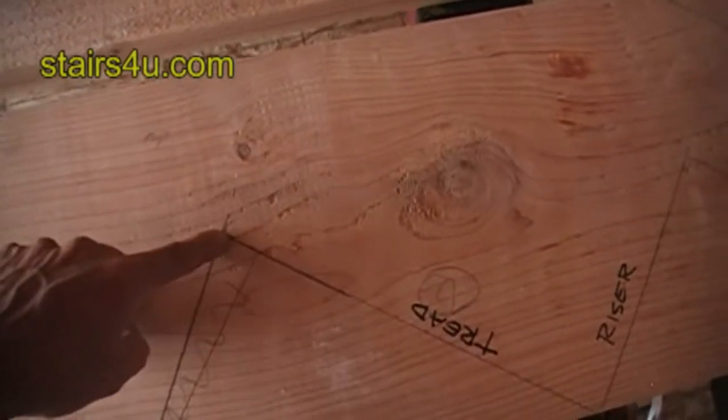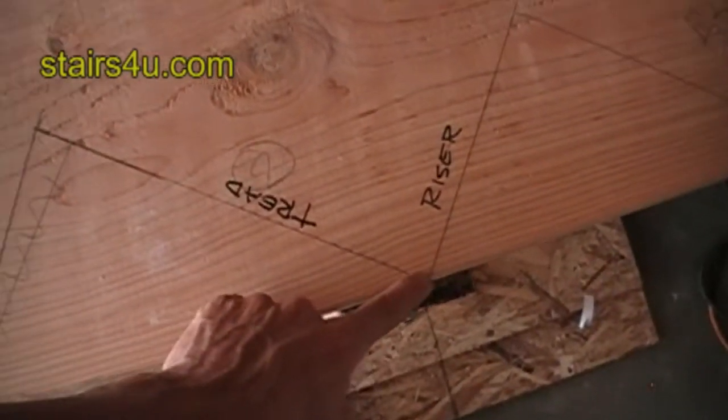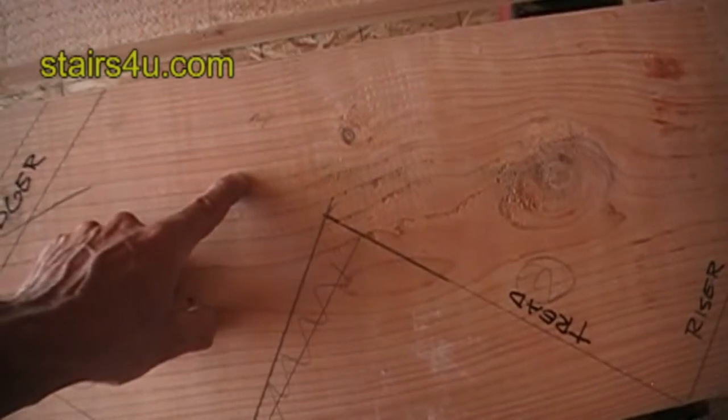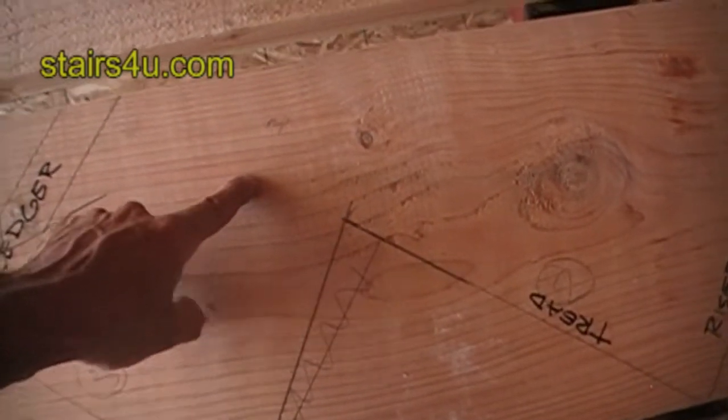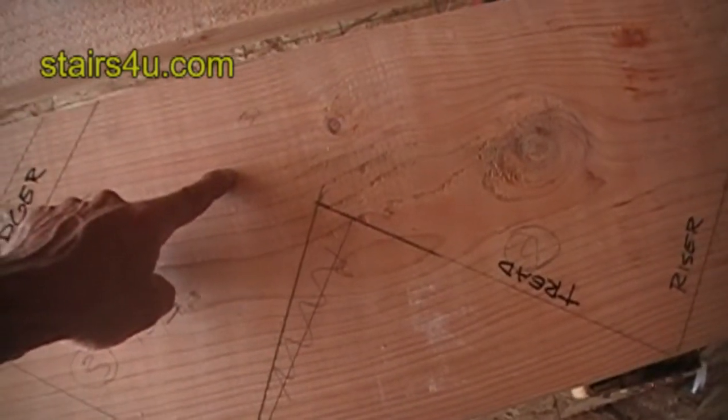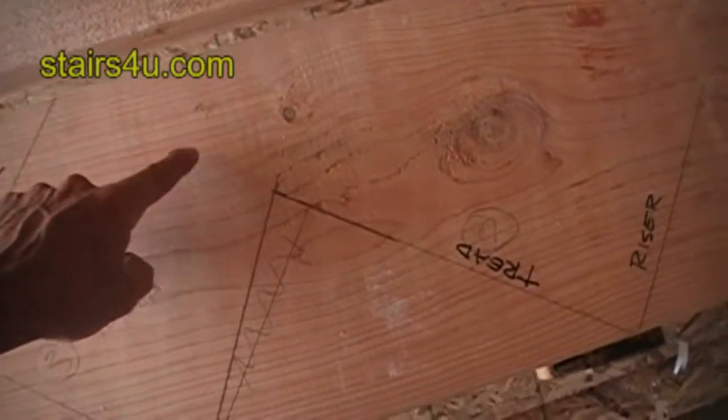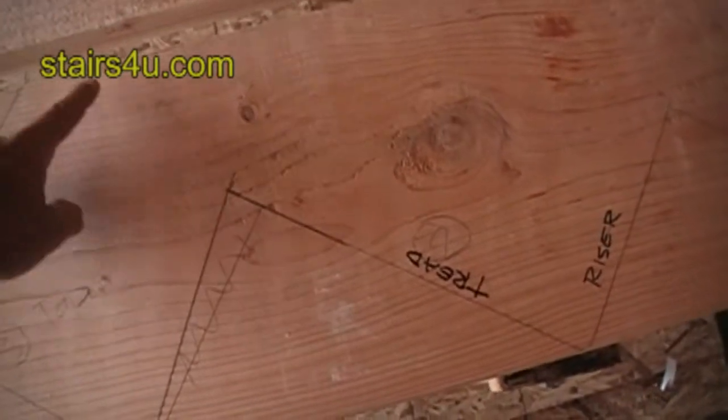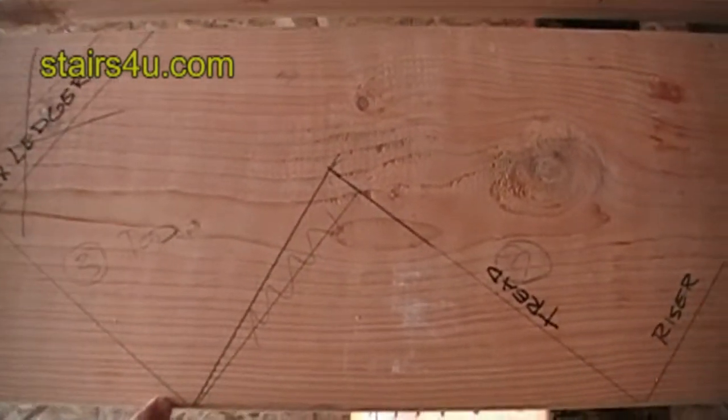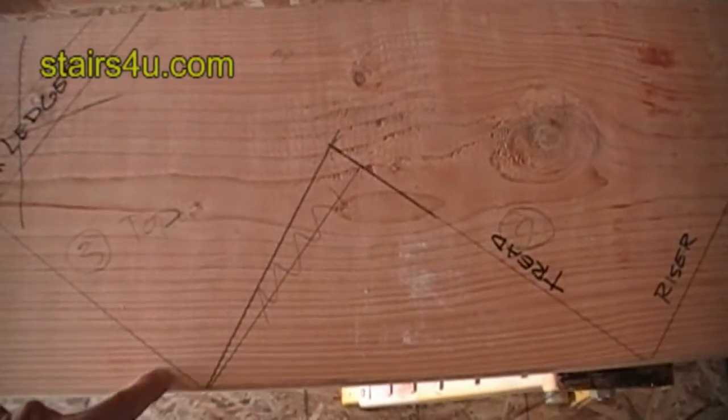You can imagine if this stair tread was 12, 13, or 14 inches, how far we'd be coming in here. Don't forget about your tread sizes when planning which type of materials you're going to use for your stair stringer. You could always lay that out on a piece of paper or plywood to give you an idea.